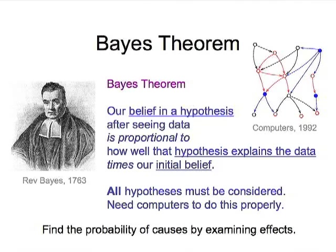In order to use Bayes' theorem, all hypotheses must be considered. To do this properly, we need computers. There's a complex network of beliefs that could involve hundreds, thousands, or millions of interacting variables. Using modern statistical computation along with Bayes' theorem for representing our probabilities, for the past 20 years scientists have been able to solve thousands of different problems using this Bayesian probabilistic approach.